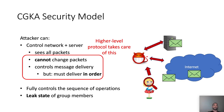The adversary controls the network and the server. He sees all packets transmitted in the network but he cannot modify them — this is one restriction. Another is that he controls message delivery, but must deliver all messages in the same order to all users. These two points are handled by the high-level protocol using signatures, so the adversary cannot modify packets if messages are signed. You can also protect message order by hashing the transcript. Besides that, the adversary fully controls the sequence of operations — he can ask users to update their state, add other users, or remove users from the group, and can also leak the state of group members.